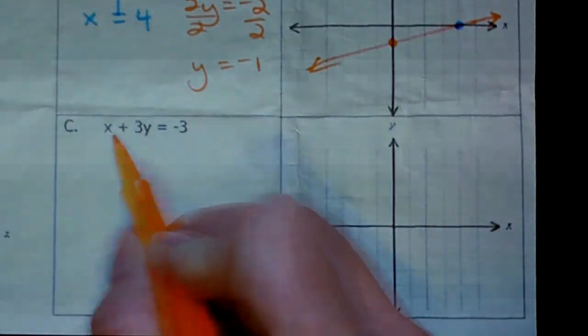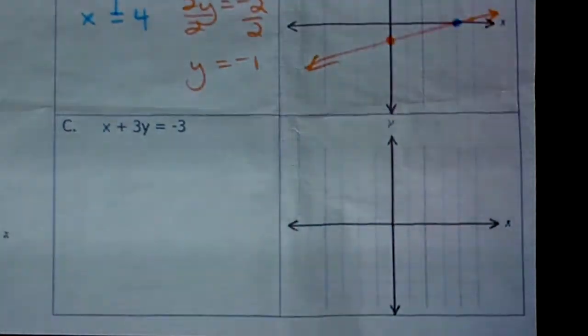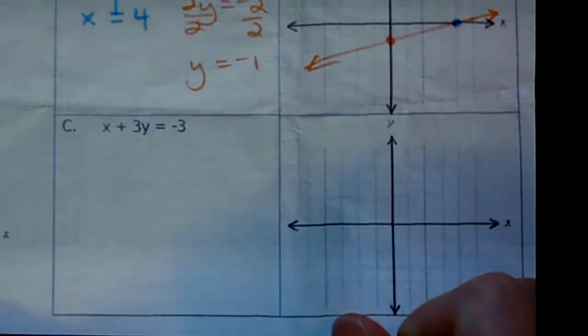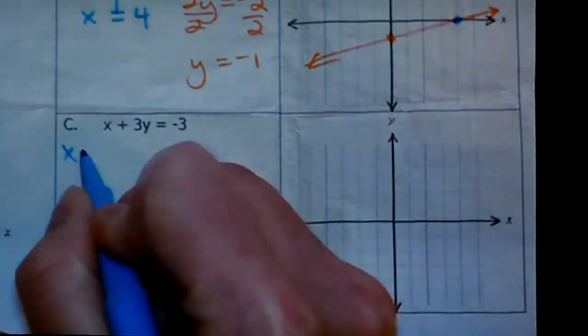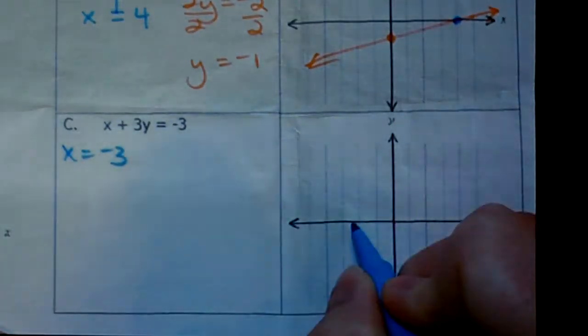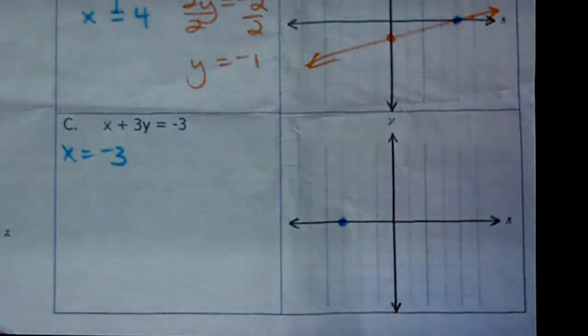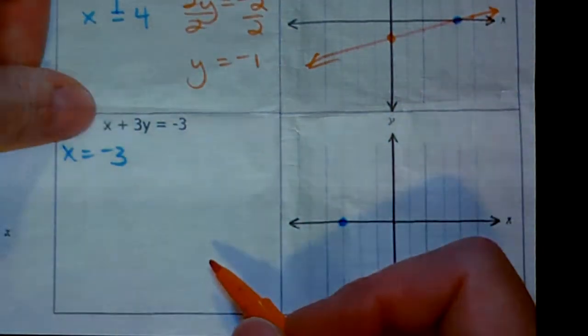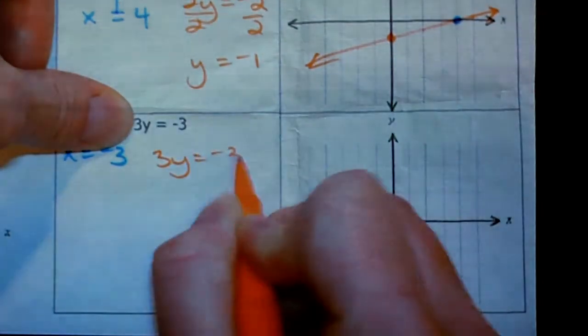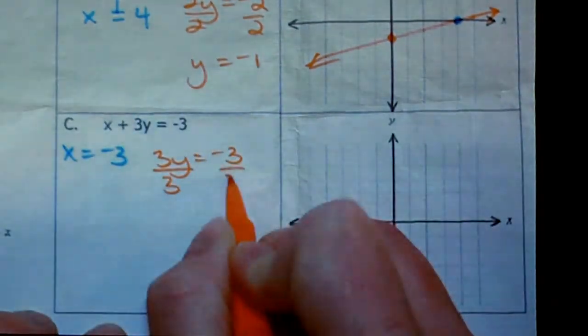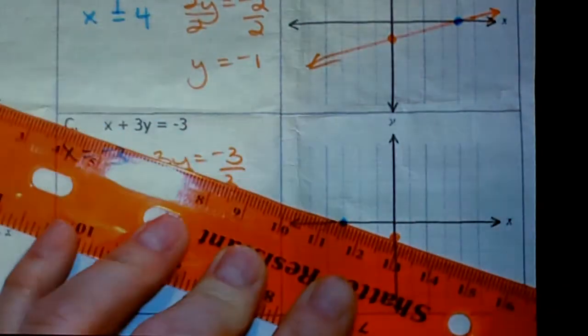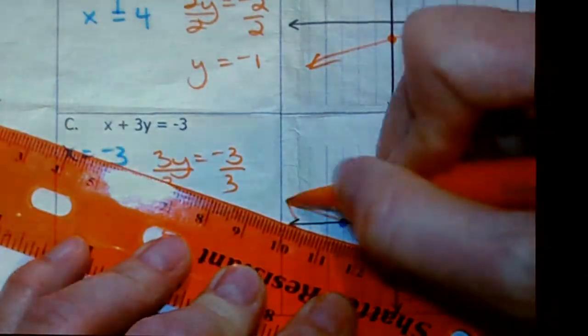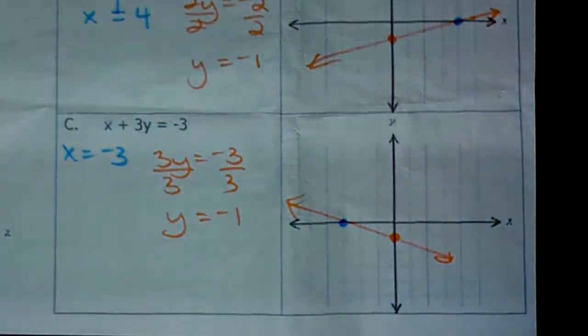Okay, it is in ax plus by equals c form. The x and y terms are on the same side, so I know I can use this method. This is nice. When I solve for the x and cover up the y, there's not anything to do. x is just equal to negative 3. So let's put that on there. When I solve for the y and cover up the x, when x is 0, I get 3y equals negative 3. We'll divide by 3 and y equals negative 1. Put it there. Grab your ruler. Draw your line. I know, standard form. It's a whole new world. I know, crazy. Alright, next page.